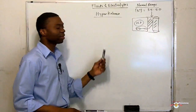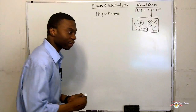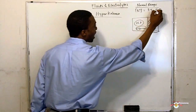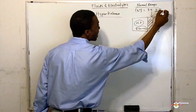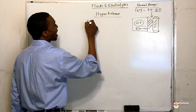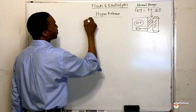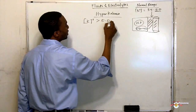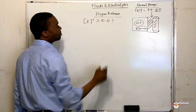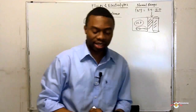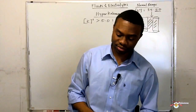What is the definition of hyperkalemia? If the highest range you can get is 5, when potassium concentration is greater than 5.0, that means you have hyperkalemia.